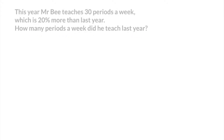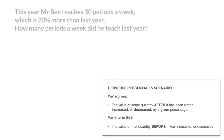Now this is a typical reverse percentage problem, in which we're given the value of something after it's been either increased or decreased by a given percentage. Indeed, we're told how many periods Mr. B teaches a week — that's 30 — after an increase of 20%. And we're being asked to find how many periods Mr. B used to teach.